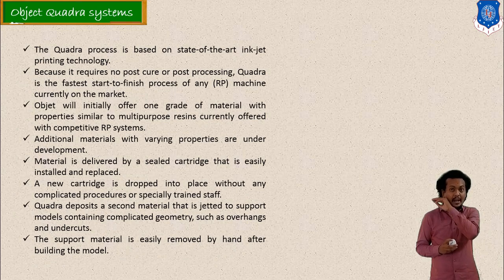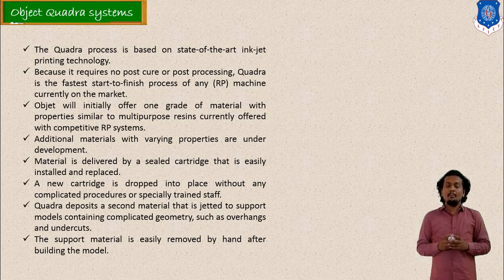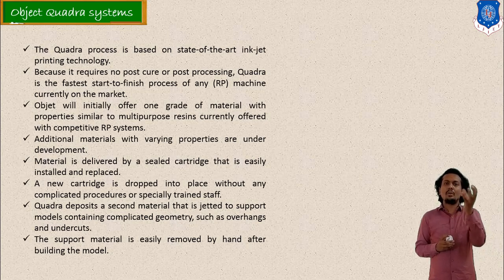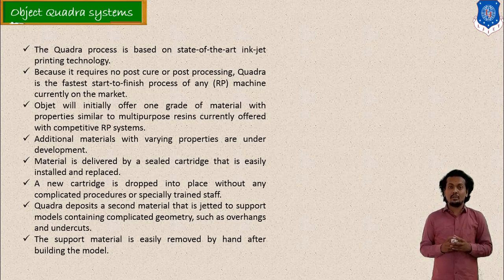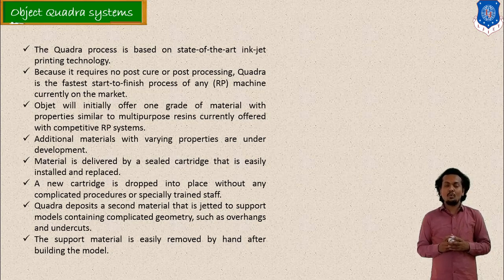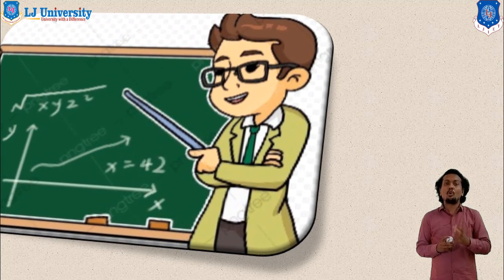All these systems and machines are for building a concept model for your rapid prototyping technique. The Object Quadra System is also used for making rapid prototyping models. In all these categories, the purpose is to provide raw material in solid, liquid, or powder form, use an extruder or heads, and build the whole model on the build platform. After the model is completed, the extra support material is removed using various tactics. Dummy supports need to be provided while building the prototype. These are the various concept modelers that can be used for rapid prototyping techniques.